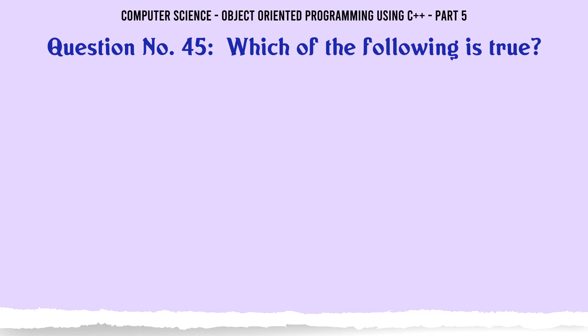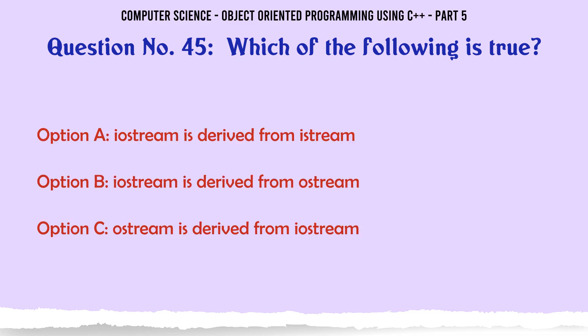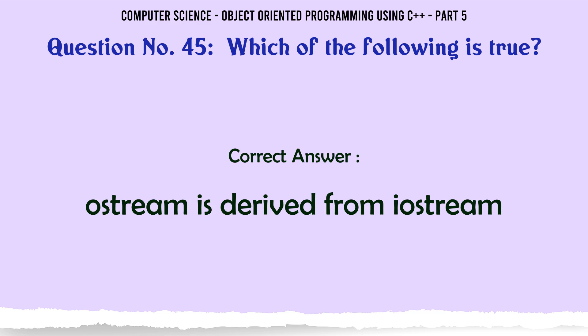Which of the following is true? A. Iostream is derived from istream. B. Iostream is derived from ostream. C. Ostream is derived from iostream. D. Ostream is derived from istream. The correct answer is: Ostream is derived from iostream.